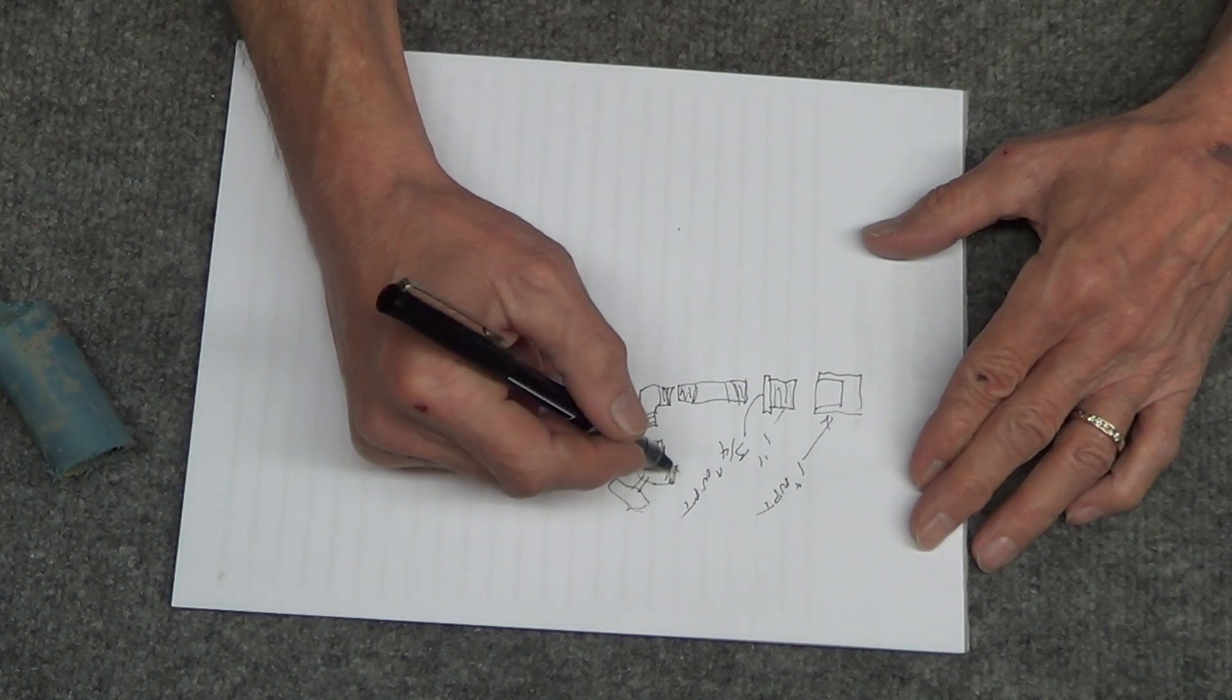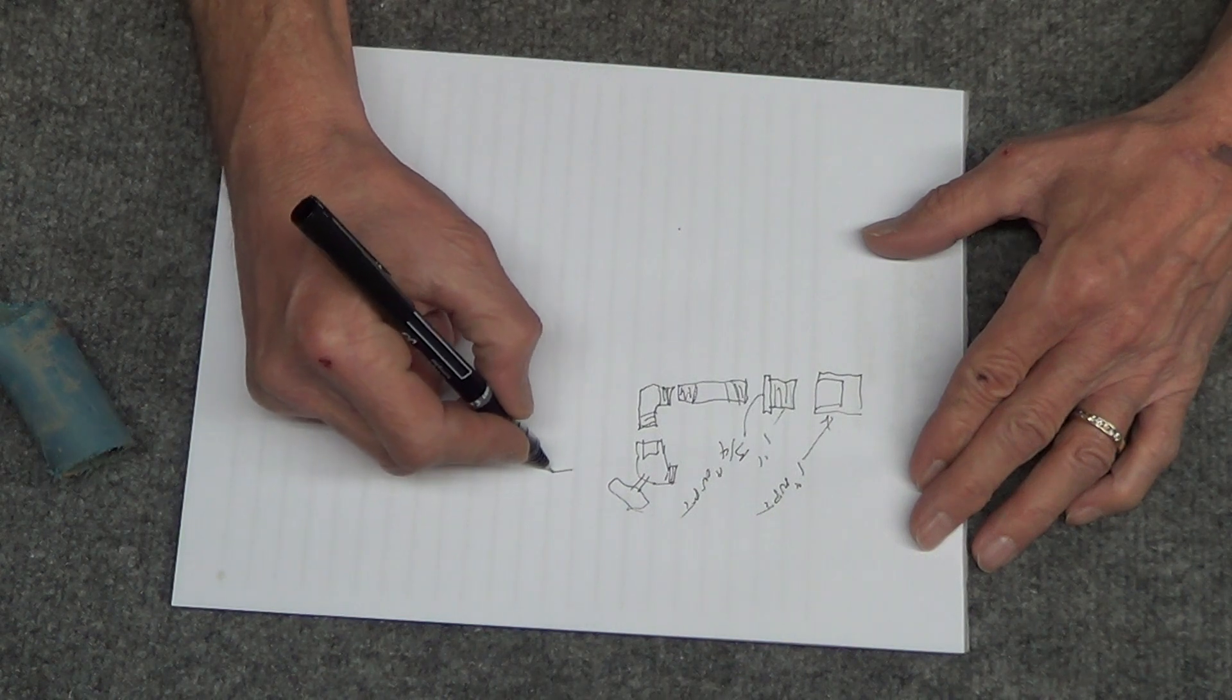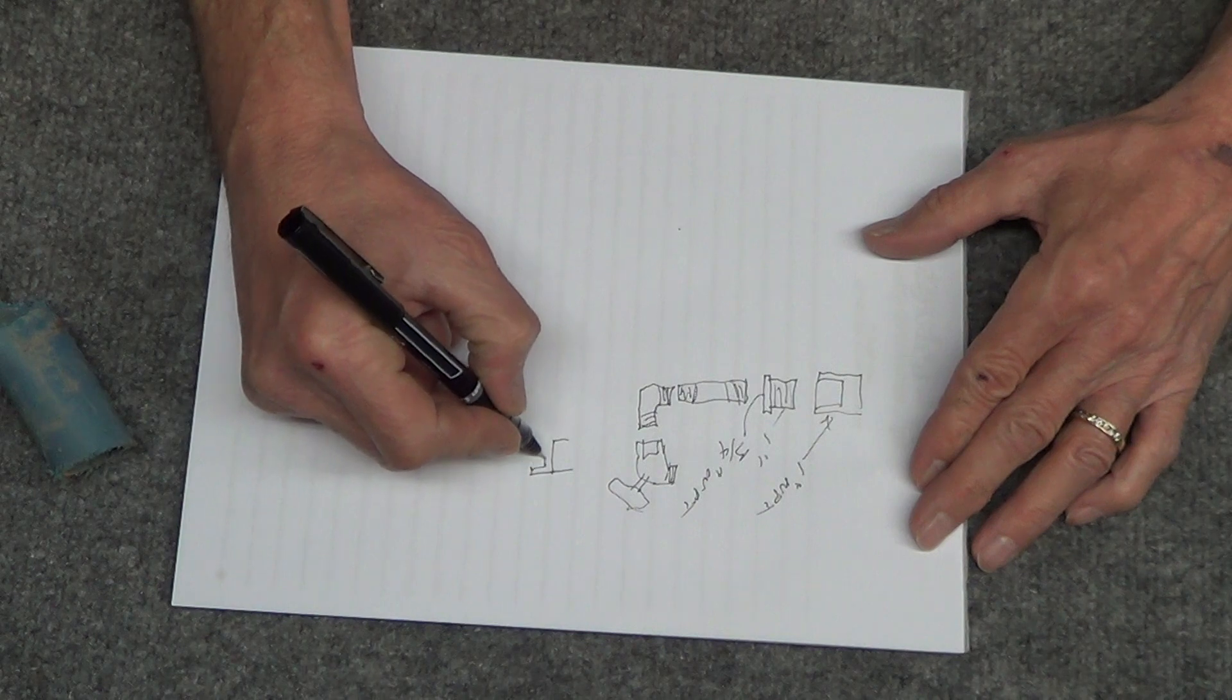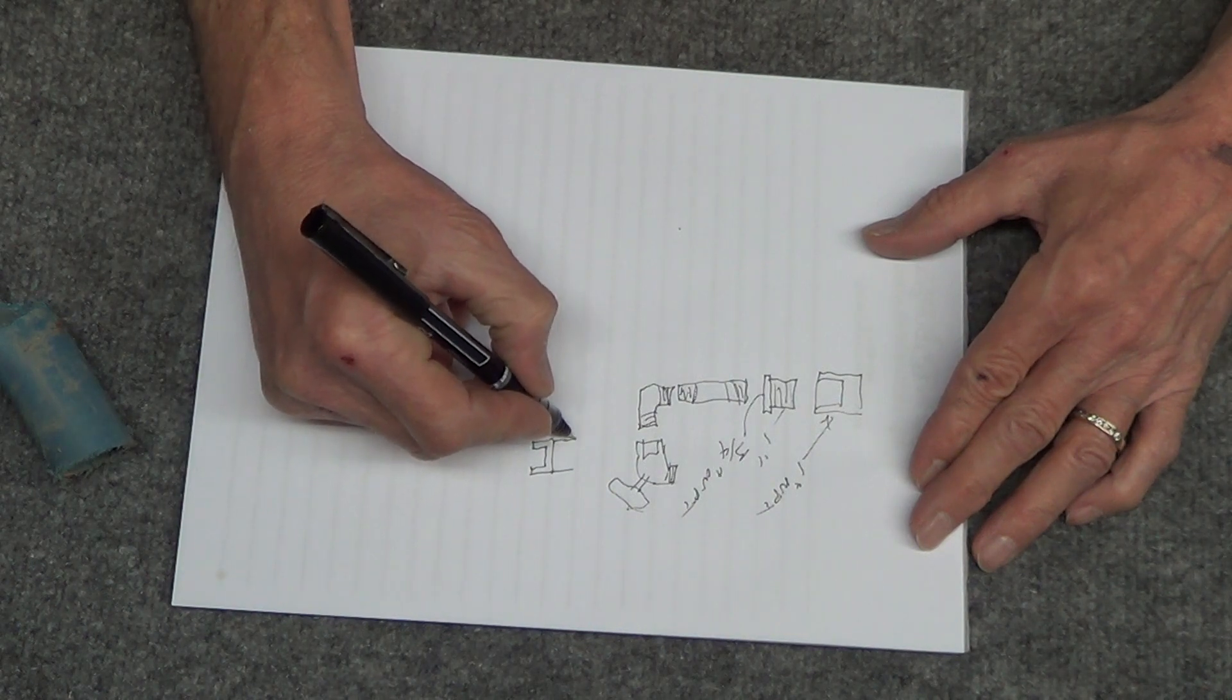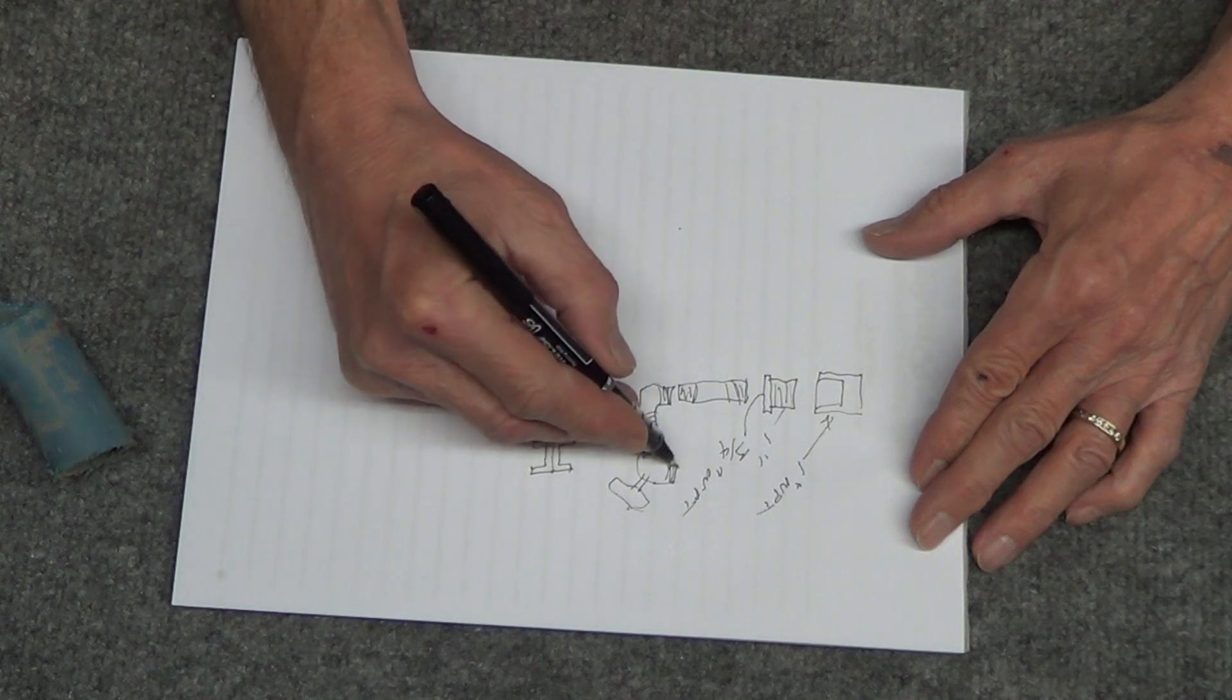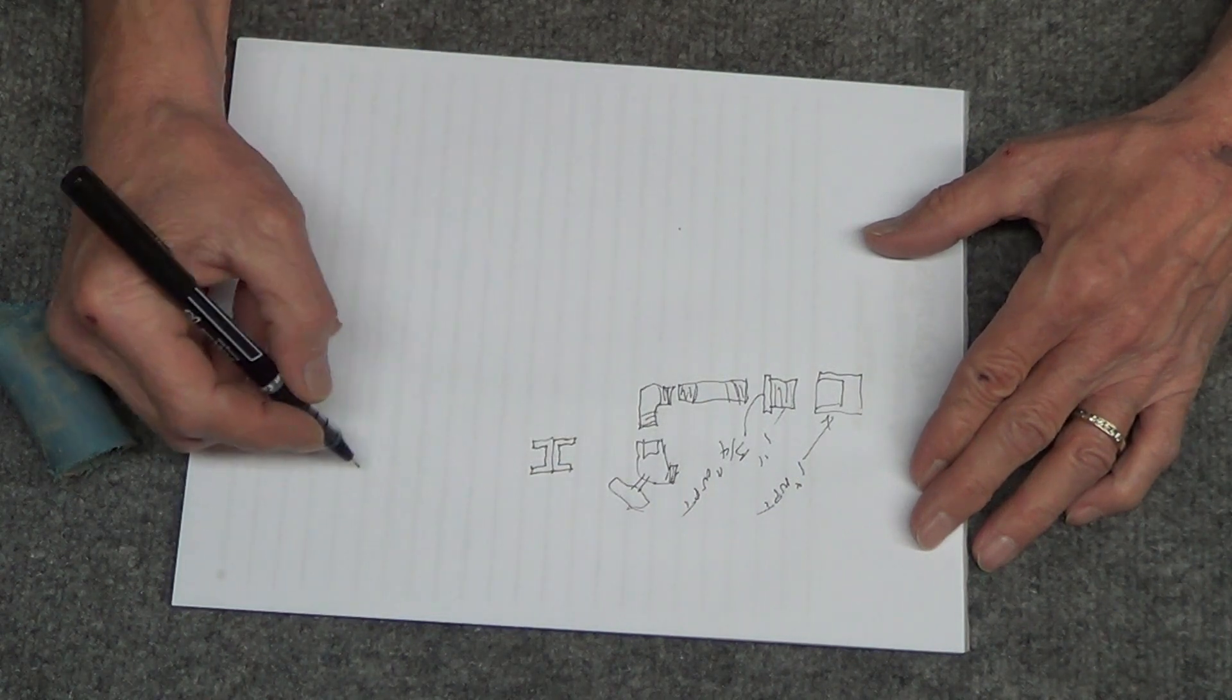Now also, they sell at Home Depot a female-to-female hose adapter. I guess I can draw it sort of like that. So you screw this on here, and then you screw the other end of your hose on there.